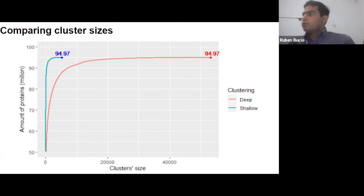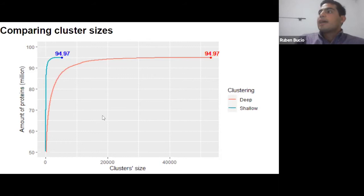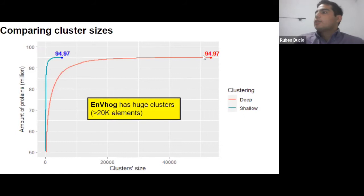Looking at some top results: if we compare the cluster sizes across the two clustering steps, we can see that in the first step almost all proteins are clustered into small-size clusters. After the second clustering step, we have clusters with more than 20,000 proteins. This is really interesting because it tells us there are highly conserved proteins that could be hallmark proteins to identify specific functions or novel viral species or genes.